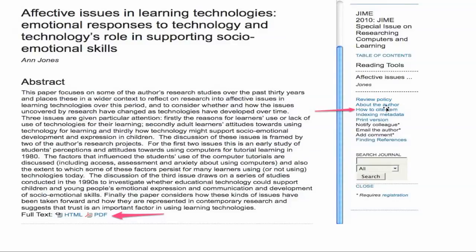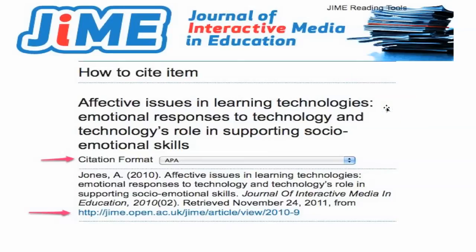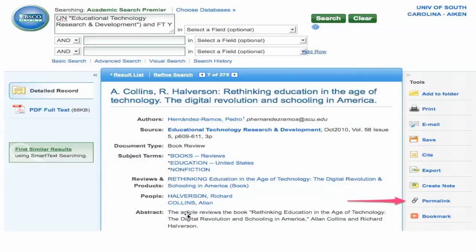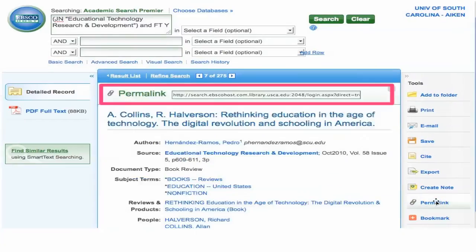In this particular article, you're given the alternative 'How to Cite the Item,' and here you're given a variety of formats. In this case I've selected APA, and there's the APA reference including the URL. Here we also have a link to a permalink.